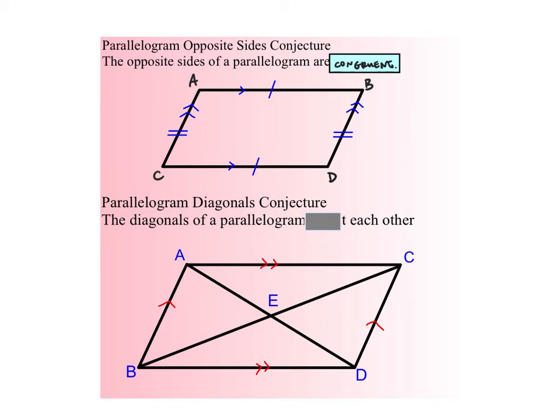Let's look at the parallelogram diagonals conjecture. The diagonals of a parallelogram bisect each other. So what that means is that AD bisects BC, cuts BC in half. So then the length from green to blue will be equal to the length from blue to red. Likewise, BC bisects AD, meaning that yellow to blue will be congruent to purple to blue. Very interesting properties that show up in parallelograms. Let's continue.